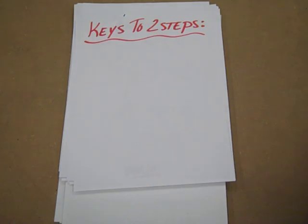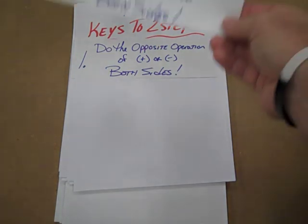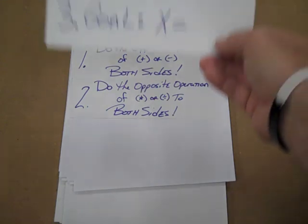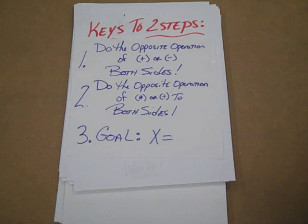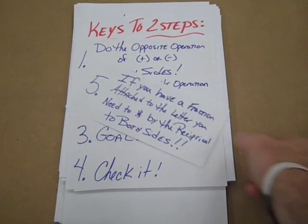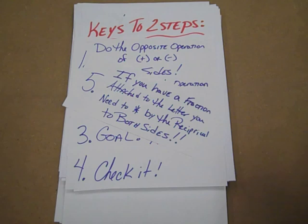The last thing is some keys to all of this, especially two steps: do the opposite operation of addition and subtraction to both sides first; opposite operation of multiplication and division second. That will get you your goal of x equals whatever you're looking for. Check it. And if you have a fraction on a letter, you need to multiply by the reciprocal on both sides. One additional thing I'm probably going to throw at you is telling me what property of equalities you're using. So show your work, good luck, use your notes.